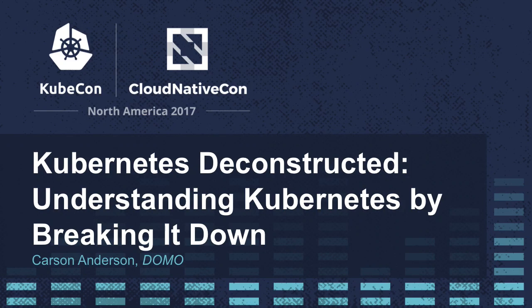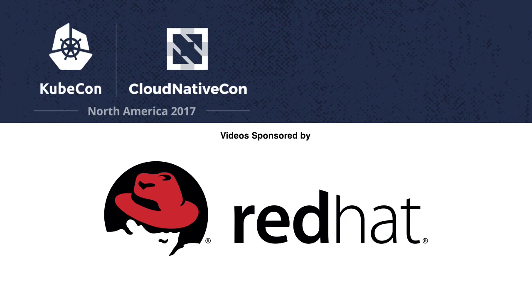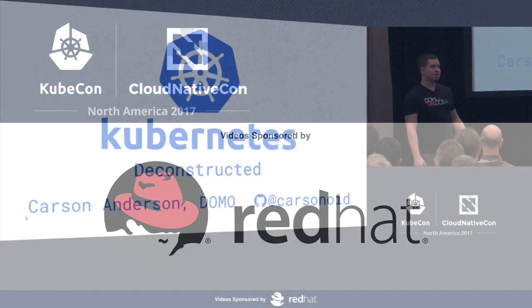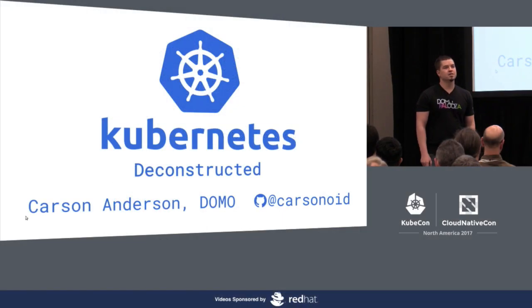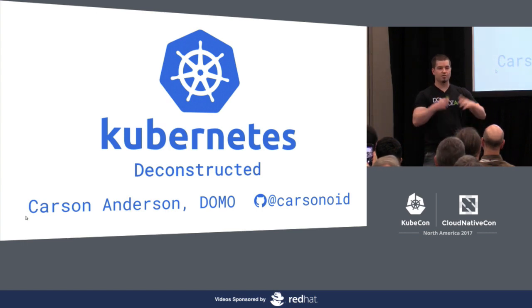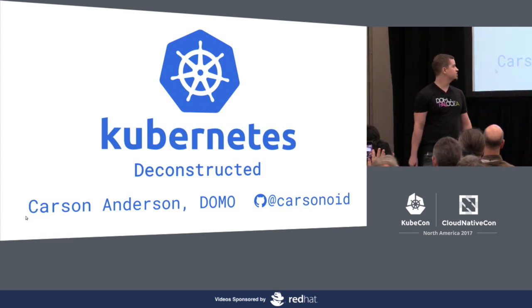Let's get started. I have so much content. My name is Carson Anderson, I'm here from Domo. I'm here to talk about Kubernetes, so don't worry, it's not a pitch at all for Domo. Right there is my GitHub at Carsonoid. That's where you can contact me, and you can get the full source for this presentation. The whole thing's open source.